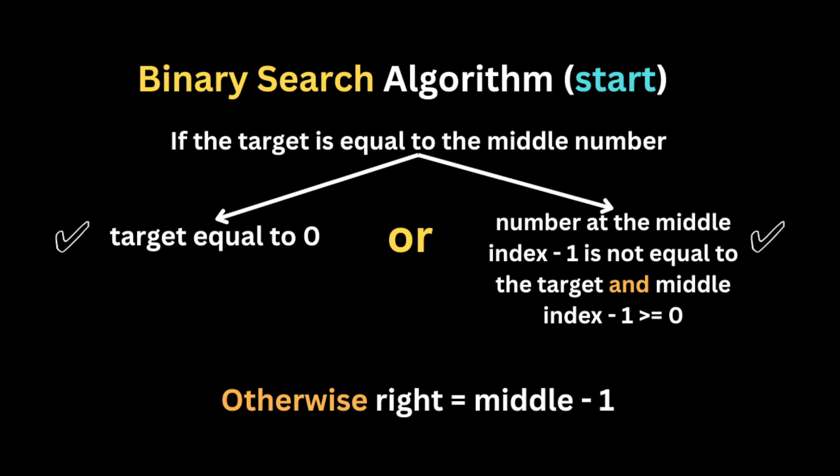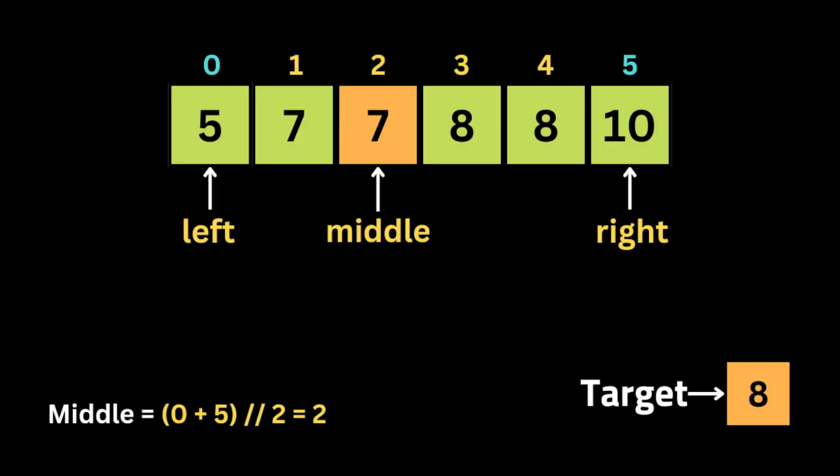If the middle number equals the target, we check additional conditions. First, if the middle index is zero, there is no number before it, so we return middle as the first occurrence. Otherwise, if the number before the middle index is not equal to the target, we've found the first occurrence. If the previous number equals the target, we move the right pointer to middle minus one and repeat the process.